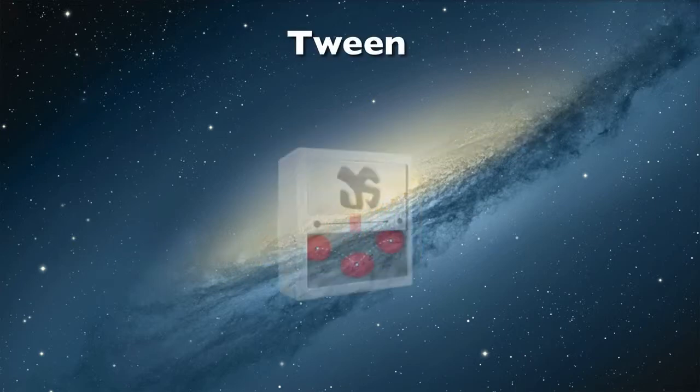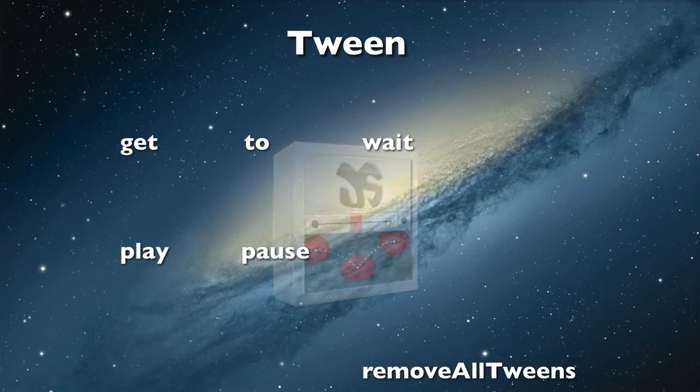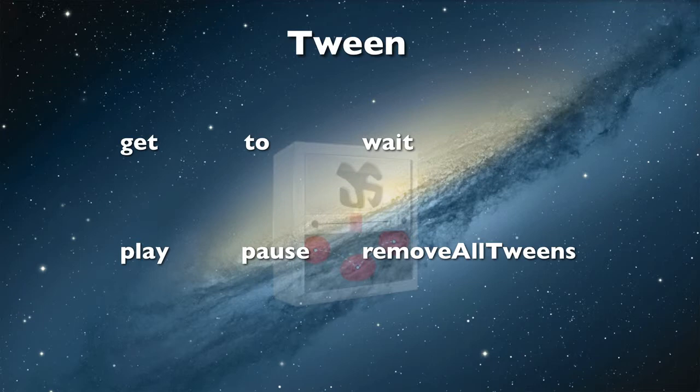The TweenJS library contains a Tween class. You can use the Tween class to animate properties of display objects such as shapes created with EaselJS. Tween instances change properties over a time duration, and when the stage updates the changes are shown. This is an abbreviated listing of the Tween class methods for creating and controlling an animation. As we use the Tween methods in examples, we can learn more about them.